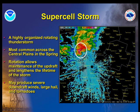The supercell is a highly organized individual thunderstorm. Supercell thunderstorms are capable of producing hail greater than 2 inches in diameter and strong downburst winds greater than 80 mph.